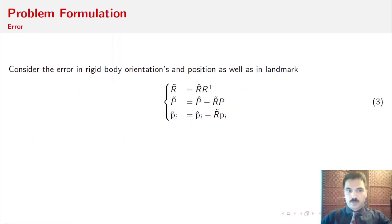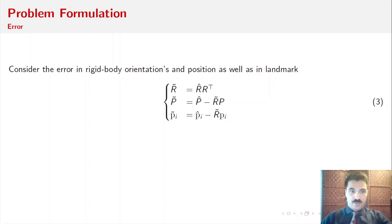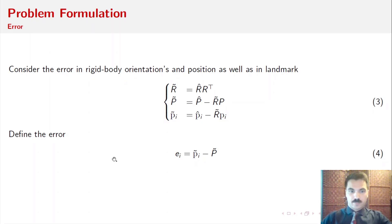Let us consider the error in the rigid body's orientation and position as well as in the landmarks, represented as R-tilde, P-tilde, and PI-tilde. R-tilde represents the rigid body's orientation error, P-tilde represents the rigid body's position error, and PI-tilde represents the error in the landmark. We also define the error component E-I, which represents the difference between the error in the landmark and the error in the rigid body's position.